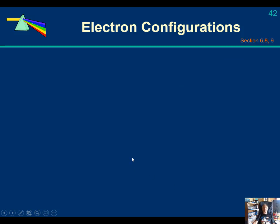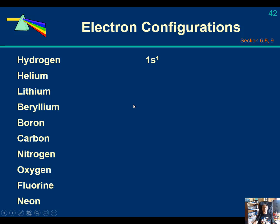All right, so let's take a look at some electron configurations. Here's hydrogen at 1s1. Then we move over to helium. That's 1s2.